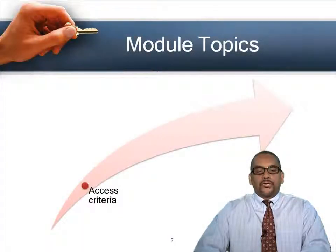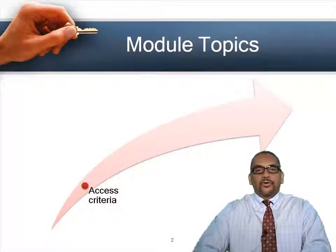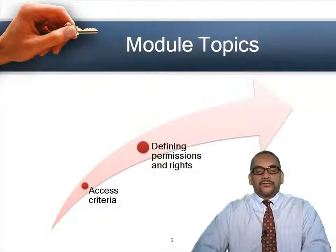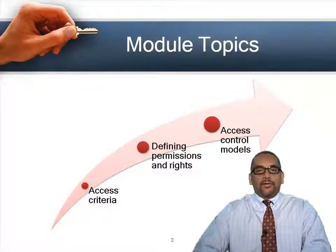In this module, we're going to talk about access criteria. We need to make sure that people have the right access to the different resources and assets. We're going to talk about how to determine the criteria by which people gain access, defining rights and permissions — who can do what to the assets — and then several access control models.